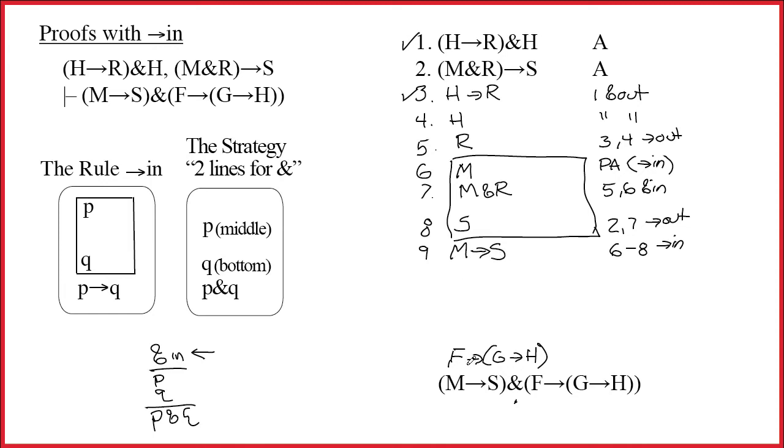Now that we have proved that, our attention has to go to f arrow g arrow h. Its main connective is also an arrow. Well, that means we're making another box. And I put the box in here. And I know immediately that f is up at the top of the box and that g arrow h is down at the bottom. And every box starts with a PA, so this will be a PA for the rule arrow in. And that's line 10.